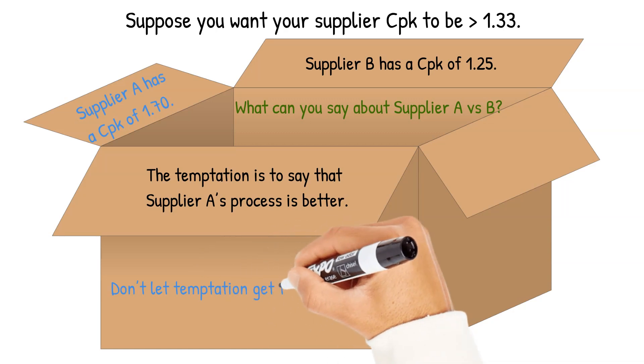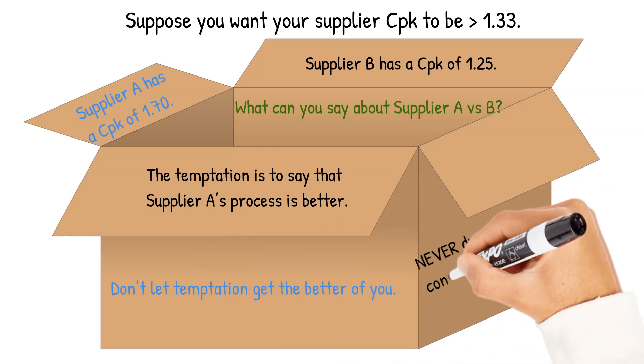Temptation is to say supplier A's process is better. But don't let temptation get the better of you. Never draw conclusions based on a CPK value alone.